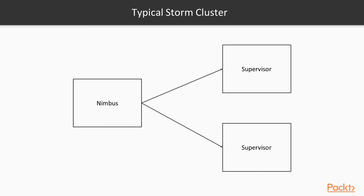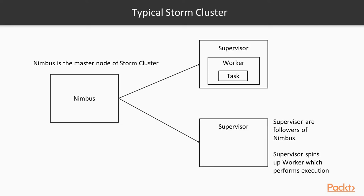When we talk about a typical Storm cluster, Nimbus is the master node. Nimbus is the one who actually coordinates with your supervisor or the worker nodes. Nimbus is the one who assigns the task to the worker nodes and also monitors the failures. And Nimbus is the one who actually accepts the topology and submits the topology in the cluster.